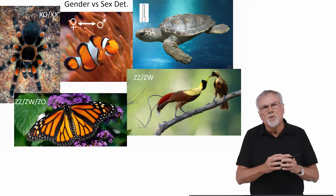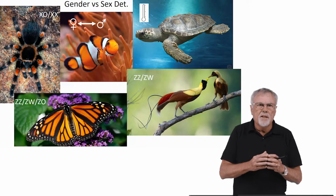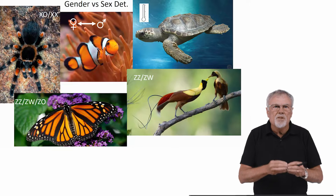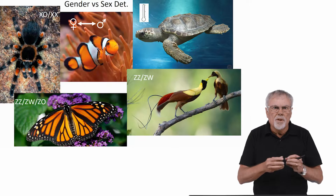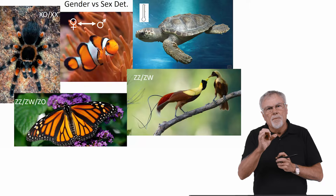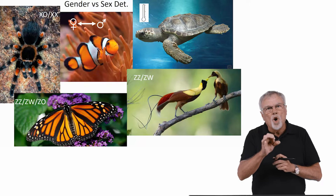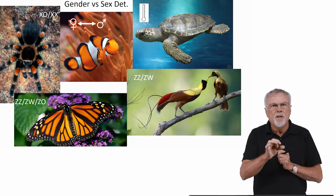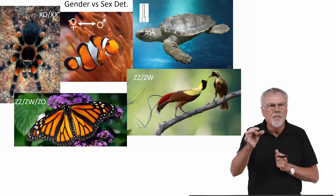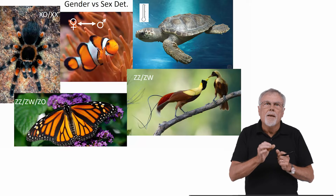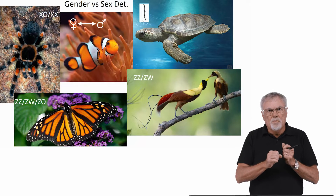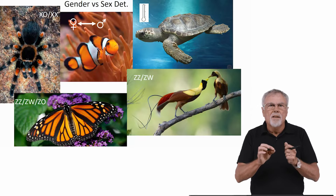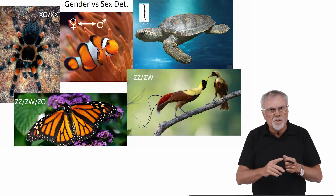Gender is a term that we use to identify individuals on the basis of the gametes that they produce. Individuals that produce the larger, stationary, or immotile gametes we assign the gender of female. Individuals who produce the small, motile gametes we call males.